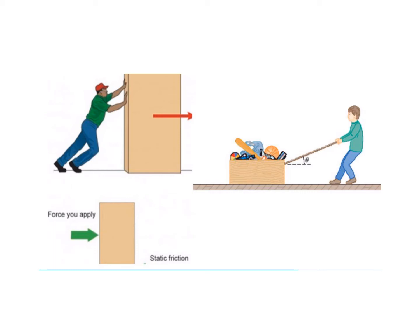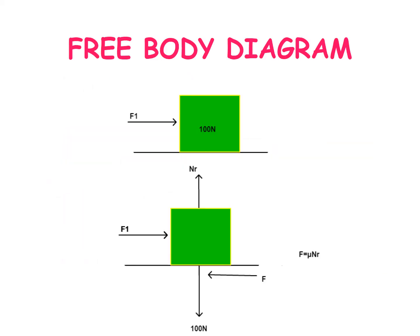Here you see an object is being pushed as well as an object is being pulled. In both cases, frictional force will be acting opposite to the direction of motion. Here the surface is static and the object is being pushed or pulled — in both cases the frictional force will be acting opposite to the direction of motion. This frictional force will be equal to the coefficient of friction (mu) multiplied by the normal reaction. This is the formula we will be using in the work-energy principle.